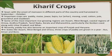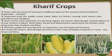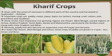Kharif crops are sown with the onset of monsoon and harvested in September and October. Important crops are paddy, maize, jawar, bajra, tur, moong, urad, cotton, jute, groundnut and soya bean. Some of the important rice growing regions are Assam, West Bengal, coastal regions of Orissa, Andhra Pradesh, Tamil Nadu, Kerala and Maharashtra — particularly the Konkan coast — along with Uttar Pradesh and Bihar.